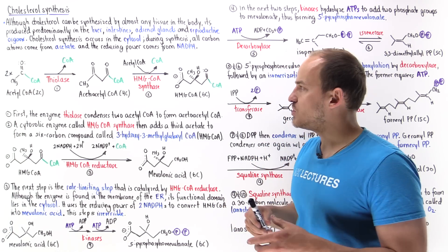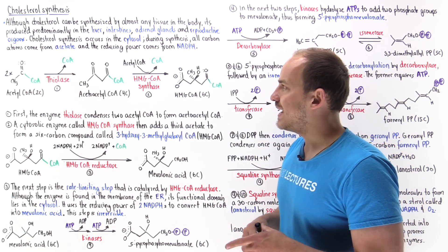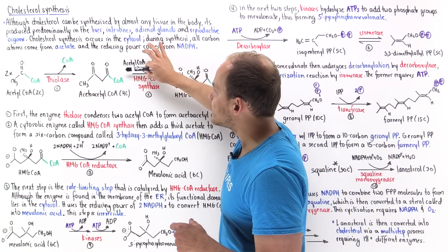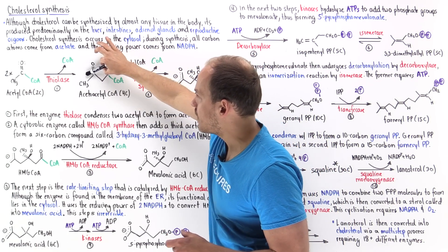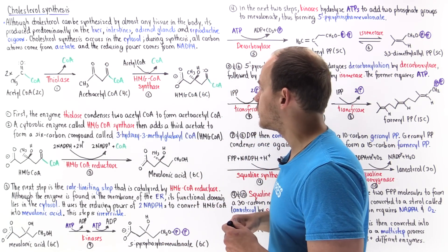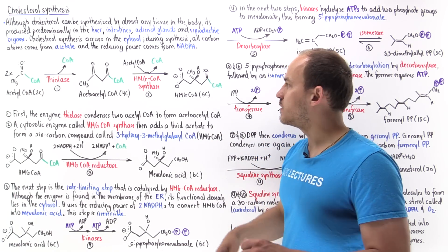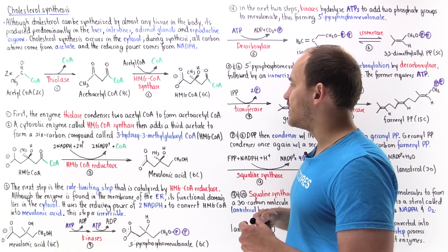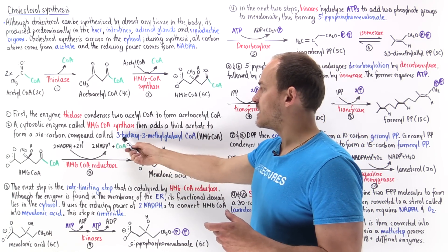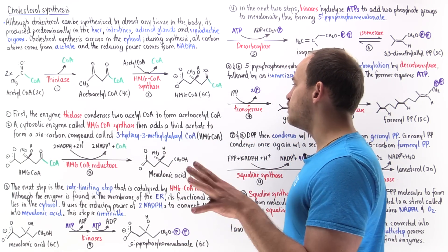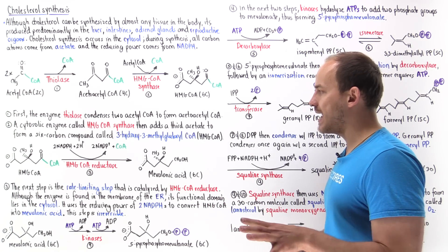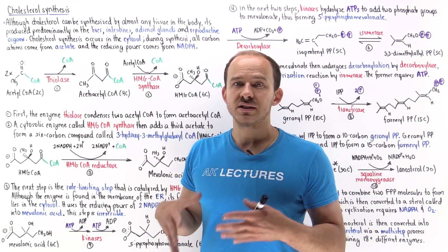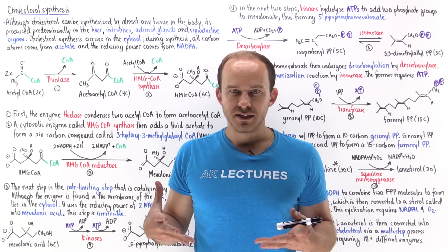Next, we have a different enzyme, HMG coenzyme A synthase, present in the cytosol. It adds another acetyl coenzyme A onto this four-carbon molecule to form a six-carbon molecule known as HMG coenzyme A — which stands for 3-hydroxyl-3-methyl glutaryl coenzyme A. Notice this is the same exact molecule that we use to help synthesize ketone bodies.